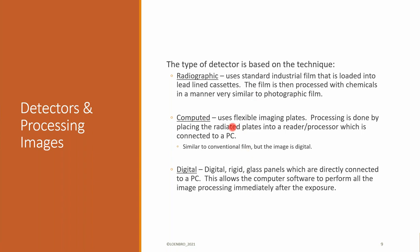Computed is kind of a combination between the two. So computed radiography uses flexible imaging plates. So you can do all the same things that you can do with your standard industrial film. It's a little bit faster, though. Your exposure times aren't quite as long as it would be with film. And there is some post-processing things you can do that can help the density and things like that. Processing with computed is done by placing the radiated plates into a reader/processor. And then that processor is connected to a PC.